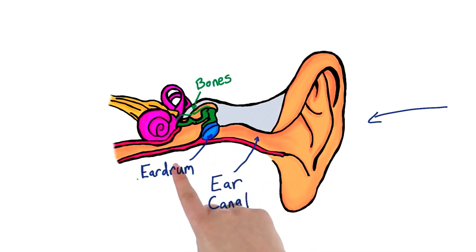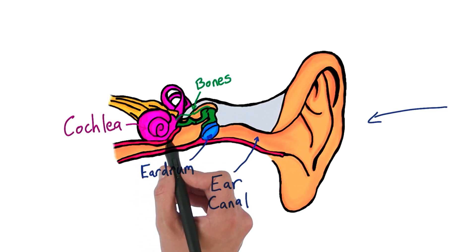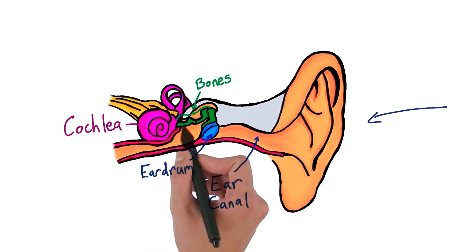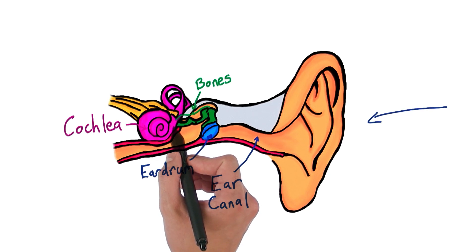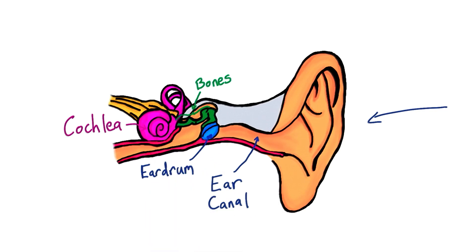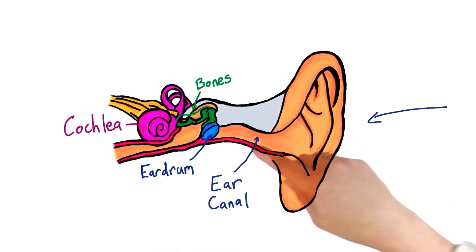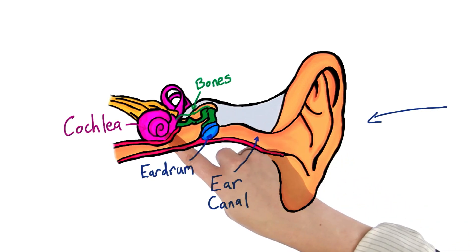What happens when the vibrations get to this curly thing here? This curly snake-like looking thing is called the cochlea. The cochlea is filled with fluid, so when the bones vibrate, they actually cause the fluid in the cochlea to vibrate as well. So we have vibrating air, which goes in to vibrate the eardrum, which vibrates the bones, which vibrates the fluid in the cochlea.